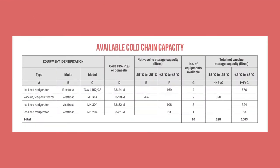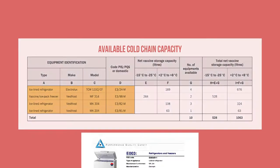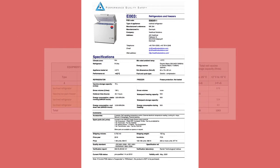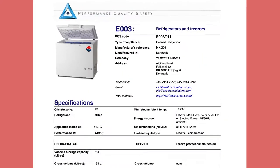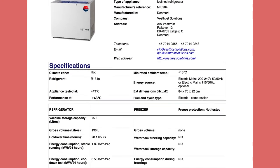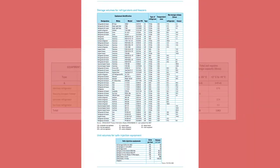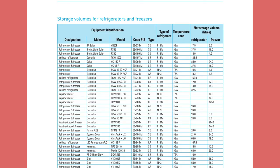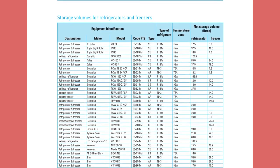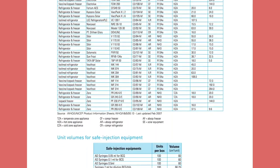Let us use this table to walk through the calculation. List the types of cold chain equipment you have, including equipment specifications. You can find these details in the WHO or UNICEF product information sheets, such as the one shown here, or the manufacturer's data. Your program may also use a table listing details and storage volumes for common refrigerators and freezers.